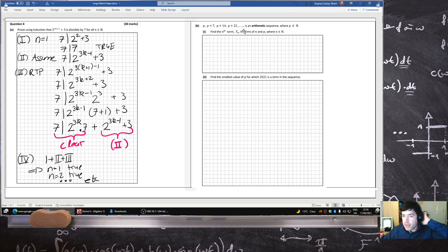Right, there's an arithmetic sequence. Find the nth term. So the nth term is a which is p plus n minus 1 times d which is 7. So that's p plus 7n minus 7. That's it I guess.